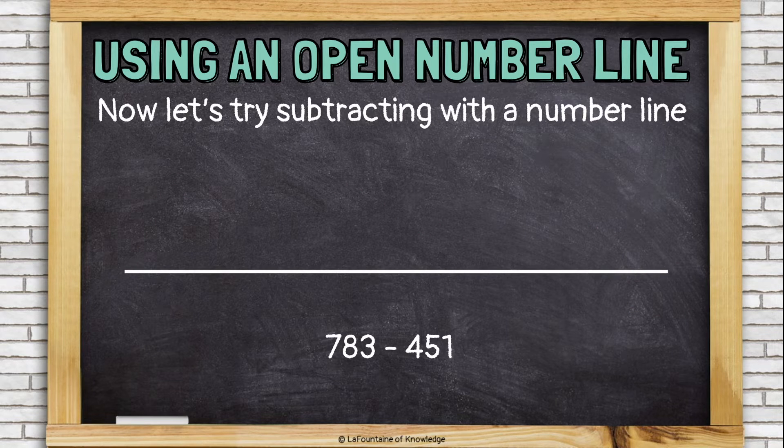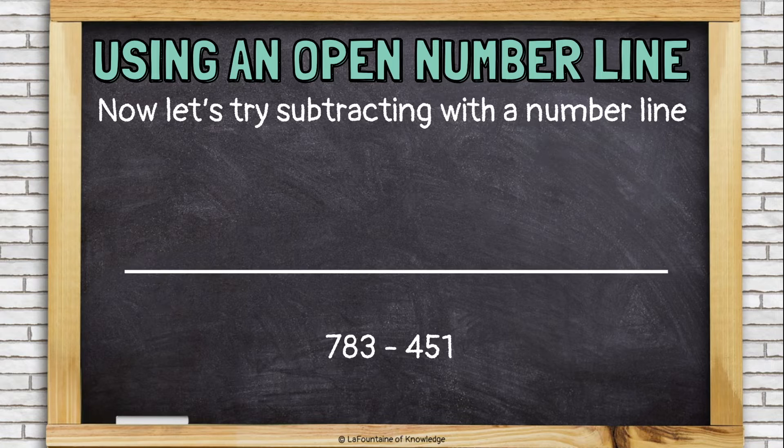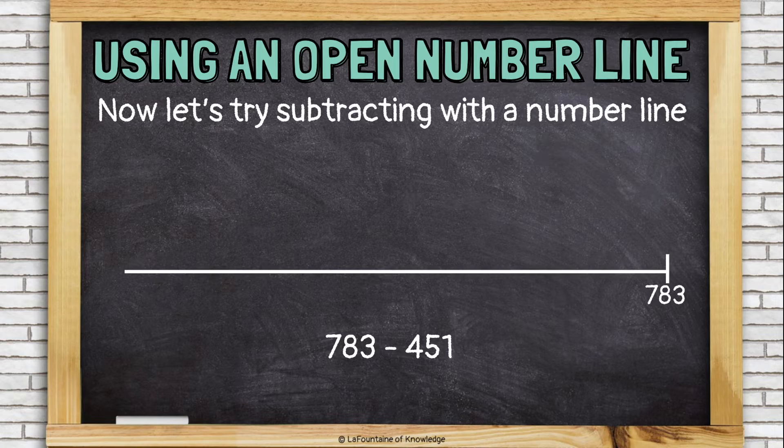Now let's try subtracting with an open number line. This time, because I'm moving backwards on the number line, I'll start at the end by placing the larger number at the end of the line, 783. Now I'm subtracting 451, so just like with adding, I need to break it into smaller parts or friendly chunks that I can take away one at a time.